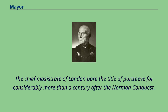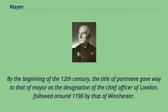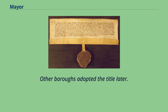The chief magistrate of London bore the title of Portreeve for considerably more than a century after the Norman Conquest. This official was elected by popular choice, a privilege secured from King John. By the beginning of the 12th century, the title of Portreeve gave way to that of Mayor as the designation of the Chief Officer of London, followed around 1190 by that of Winchester. Other boroughs adopted the title later.